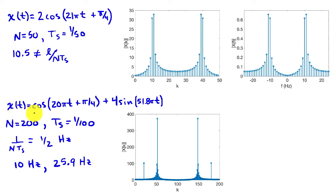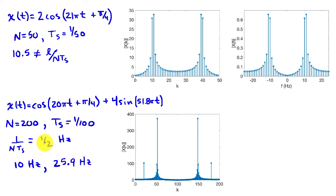Here's another example with a sum of two sinusoids: a cosine at 10 hertz and a sine at 25.9 hertz. The amplitude of the sine is 4 times that of the cosine. We choose N equals 200 and t-sub-s equal to 1 over 100. The sinusoids used by the DFT are integer multiples of one-half hertz. The 10 hertz sinusoid should appear at DFT index 20, since 20 times one-half equals 10 hertz, while the 25.9 hertz sinusoid is not an integer multiple of one-half.